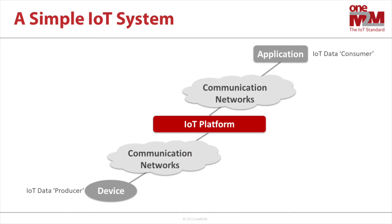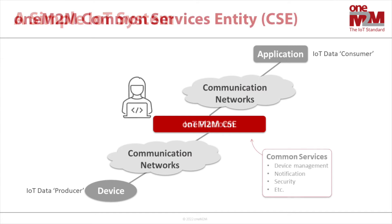So how does this system map to the oneM2M framework? This illustration is a variation of the basic arrangement. You can see that the IoT platform is now labeled as a oneM2M CSE. CSE stands for Common Services Entity, which means that the CSE contains a family of common services. Some examples are device management, event notification, and security.